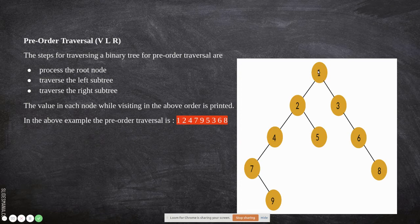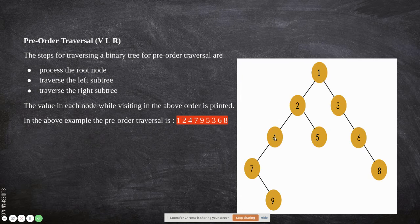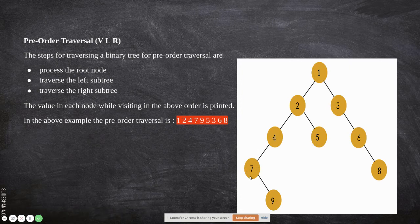After printing the root, we go to its left child. That node becomes the parent, so it is printed first, then we move to its left again. At each level, we print the parent first, then move to its left child. We continue this way, printing the parent at each step before moving left.